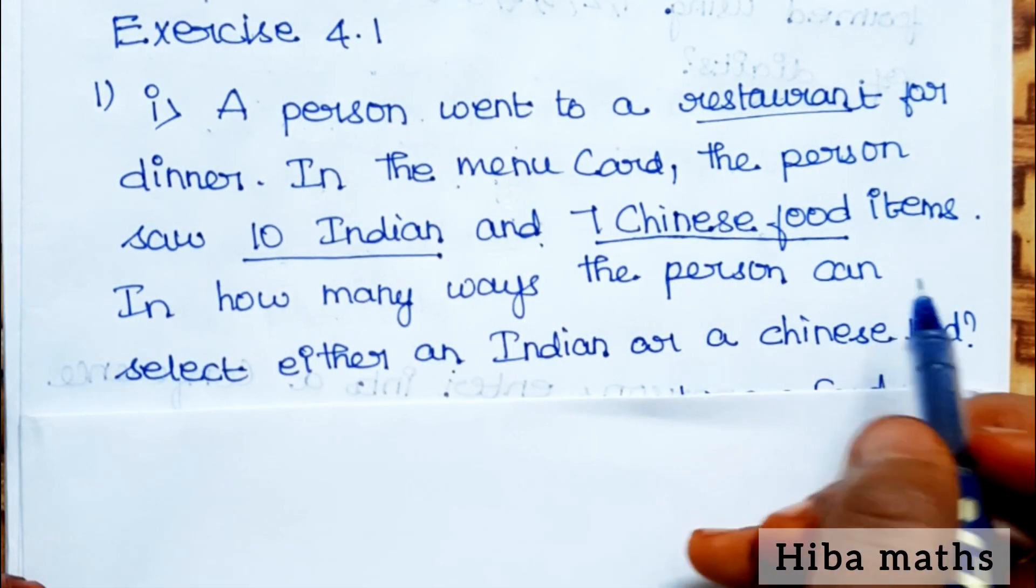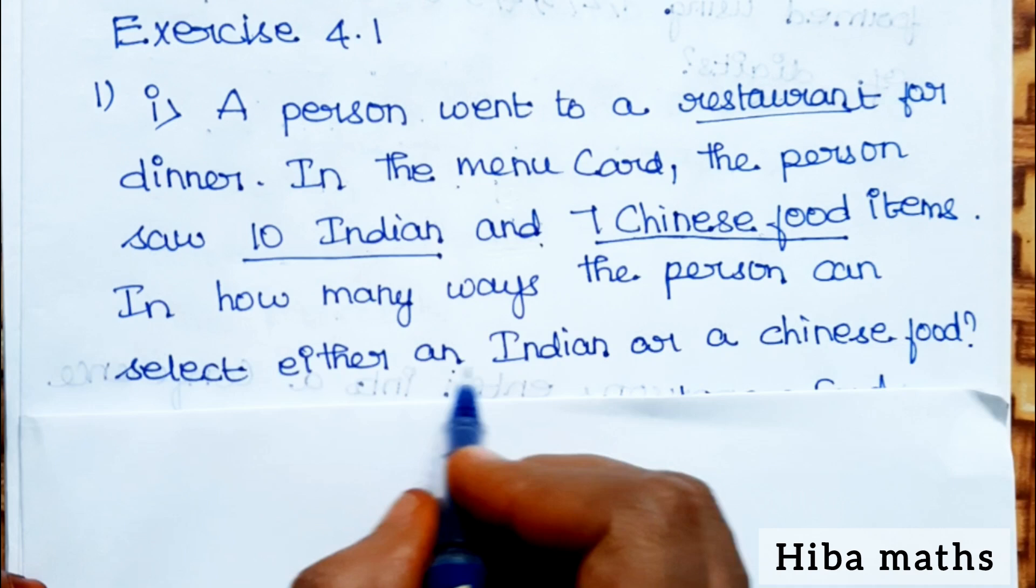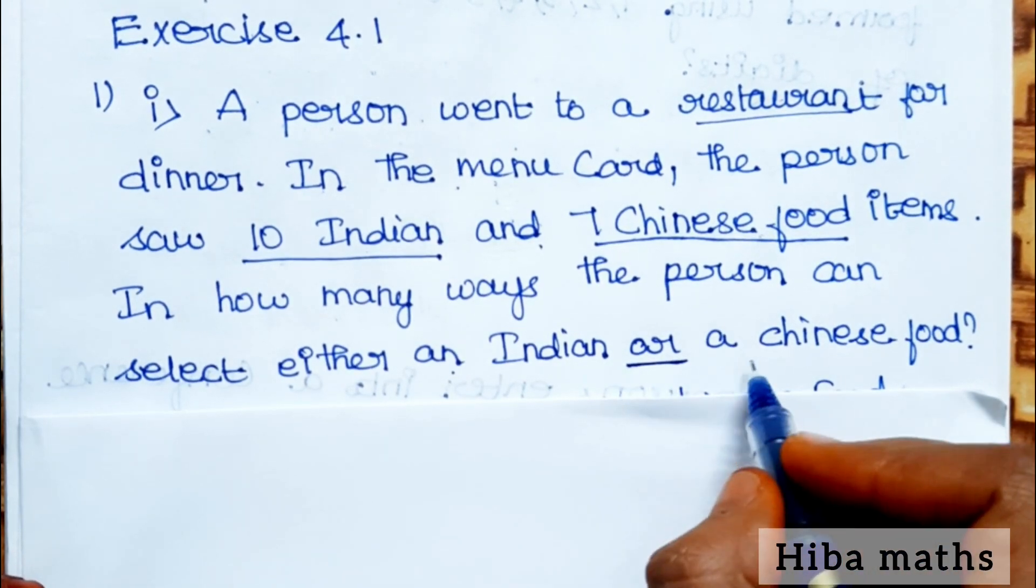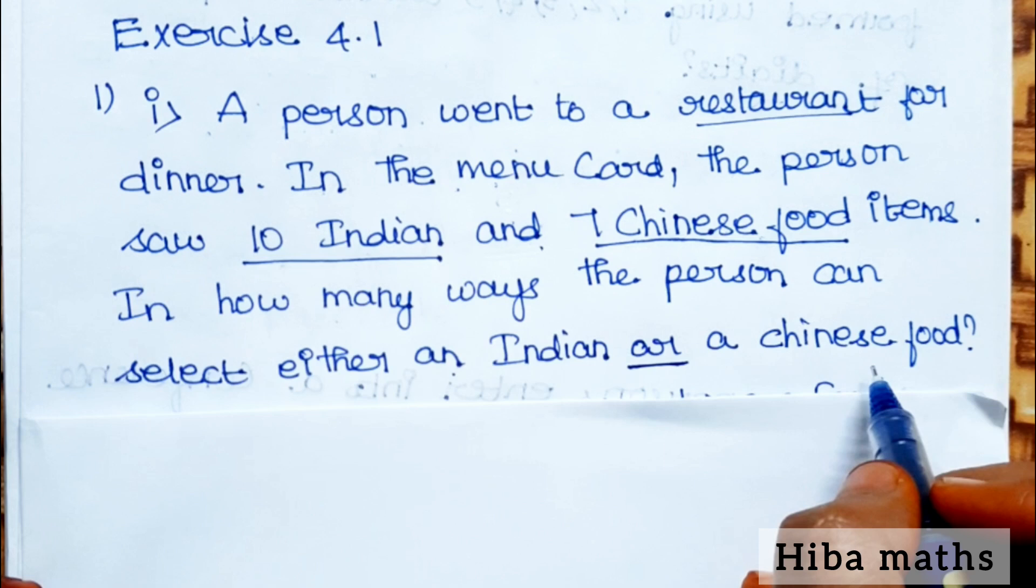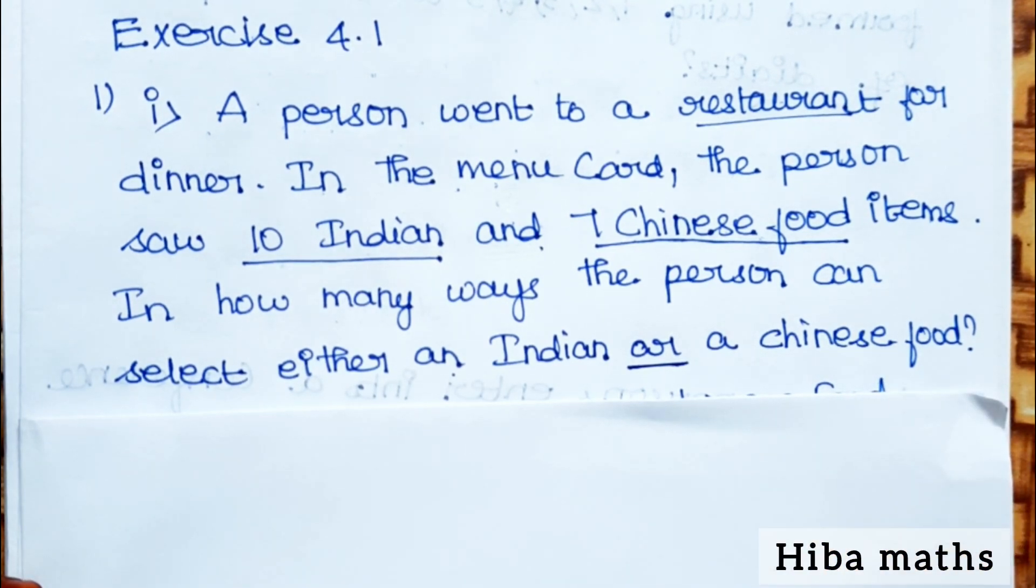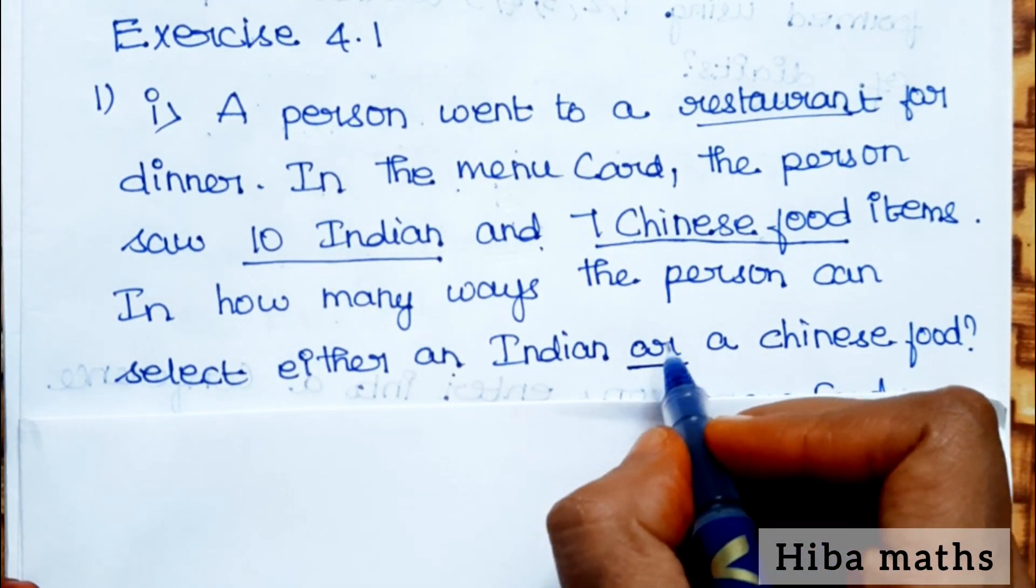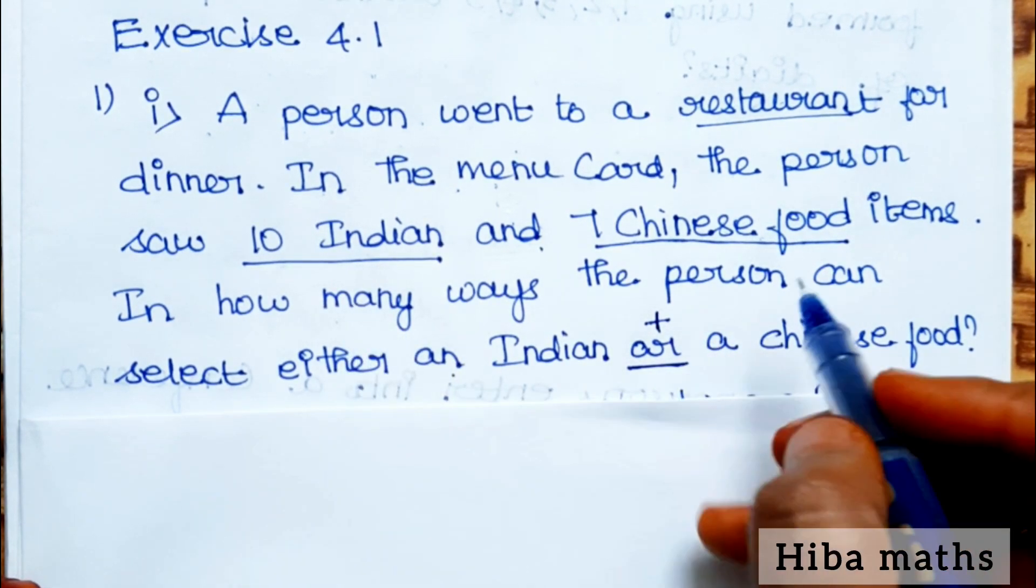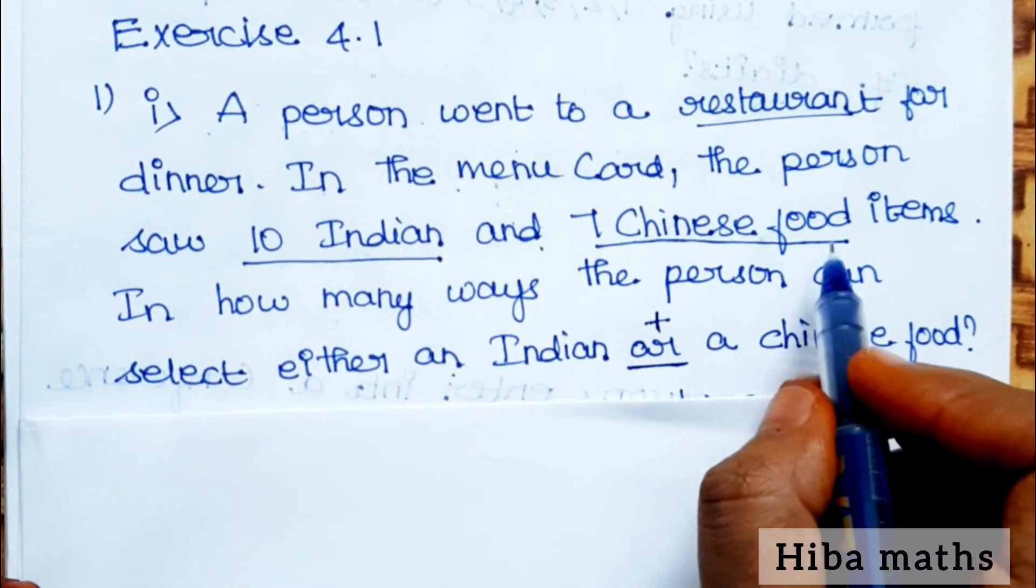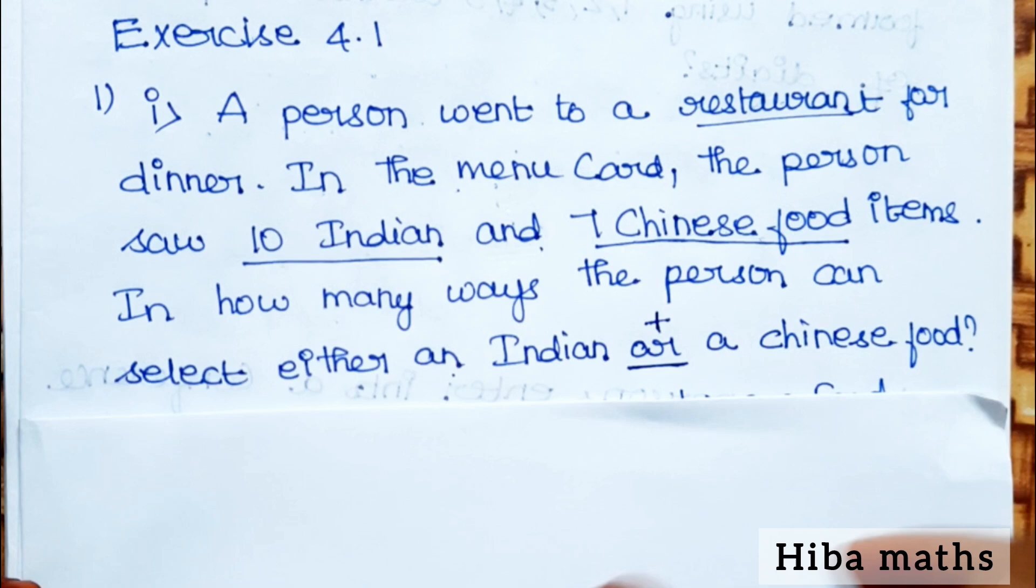In how many ways can the person select either an Indian or a Chinese food? Either one or the other can be chosen. For either or, we use plus. There are 10 Indian food items and 7 Chinese food items. In how many ways can you choose?